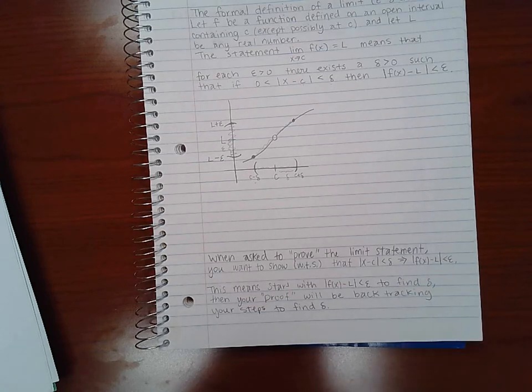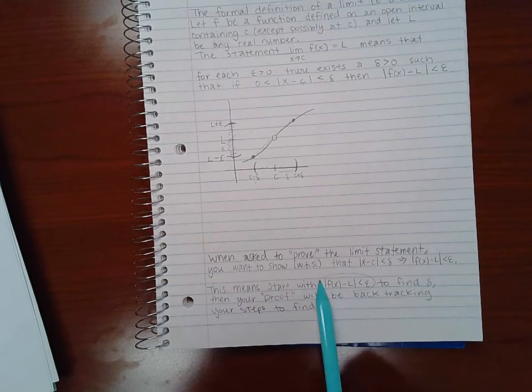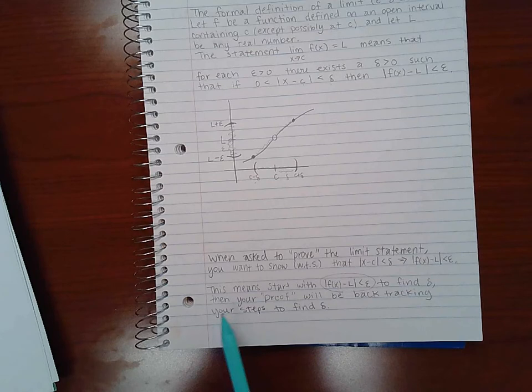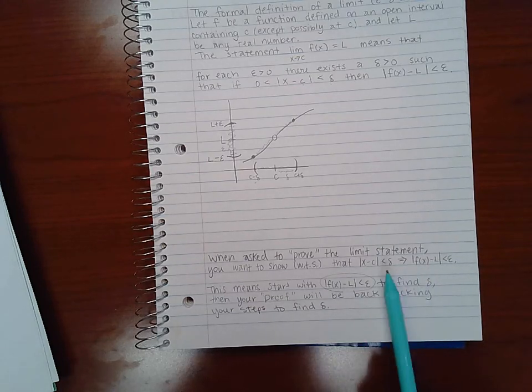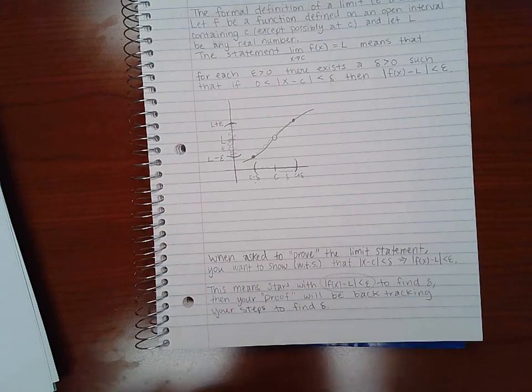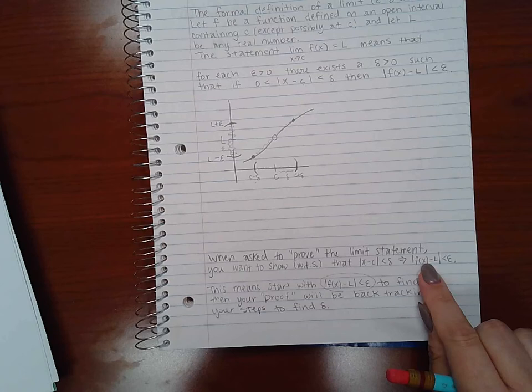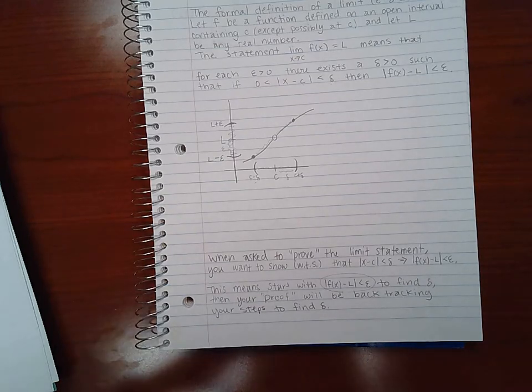That's a little bit difficult to do, so what I do is I start with this information and I use it to figure out what delta would need to be. Then my proof will be backtracking my steps to find delta. Basically I'm starting at the end and going to work my way to the beginning, and then I'm going to use all of that information to start here and go in this direction.